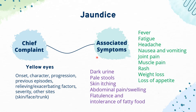Next, we have to explore any associated symptoms. Symptoms such as dark urine, tea-coloured urine, pale stools, skin itching, abdominal pain, swelling, flatulence, and intolerance of fatty food will point the diagnosis towards liver, pancreatic, or biliary tract diseases. We should also rule out infectious causes such as hepatitis by asking about fever, fatigue, headache, nausea and vomiting, joint pain, muscle pain, rash, weight loss, and loss of appetite, to decide if there is any malignancy.